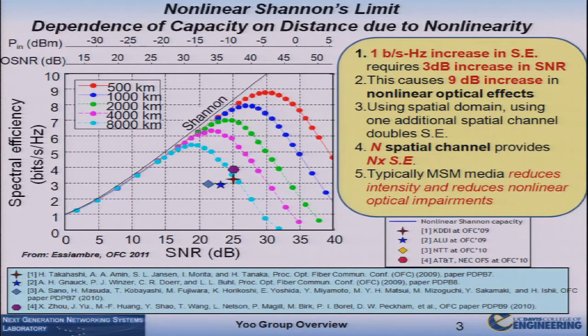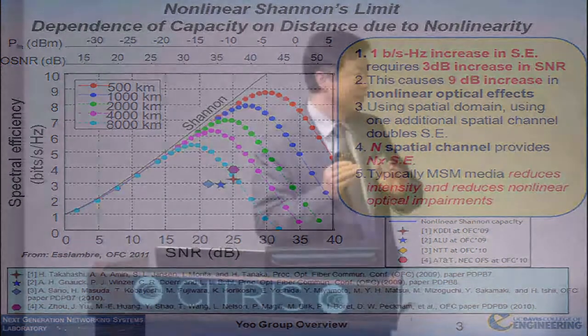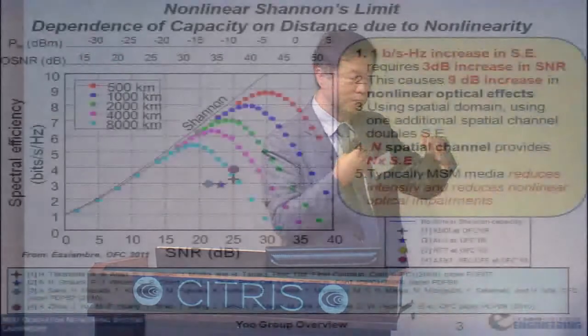Shannon's law tells you that as you go to higher spectral efficiency, you need a higher signal-to-noise ratio. With a given amount of noise, you need lots of power, and each time you add 1 bit per second per hertz of spectral efficiency, you increase the signal-to-noise ratio by 3 dB. That means with the chi-3 or optical Kerr effect, you'll see about a 9 dB increase in nonlinear effects. Some people try to go to 10 bits per second per hertz, but it makes more sense to step back and branch out to parallelism — just like we did with WDM and coherent communication.